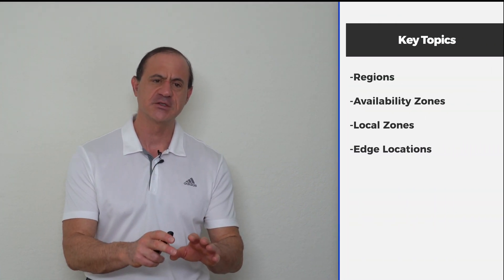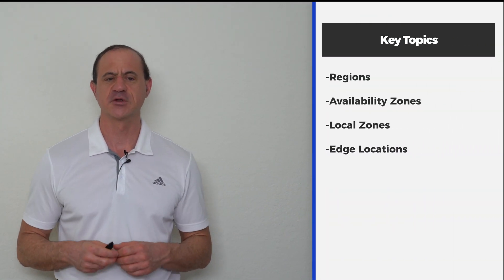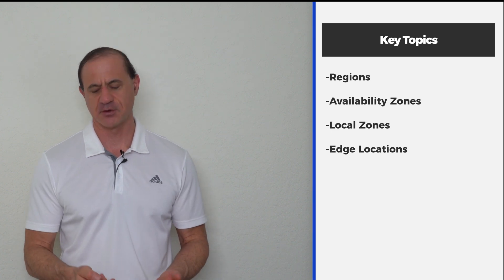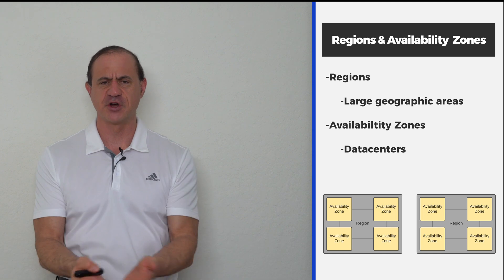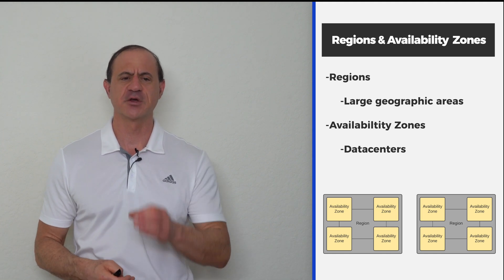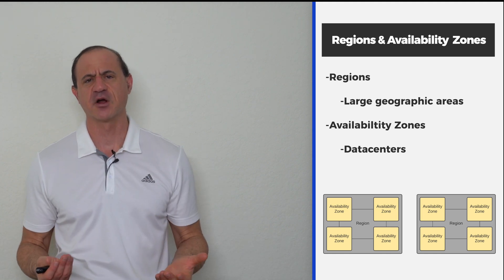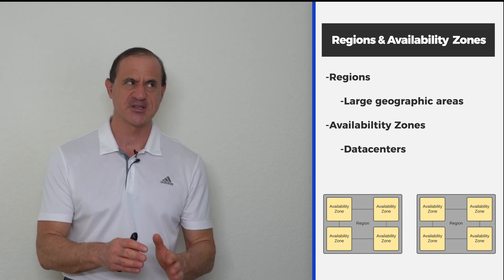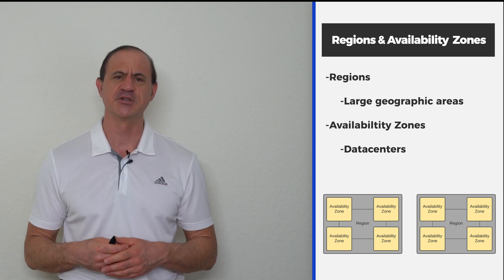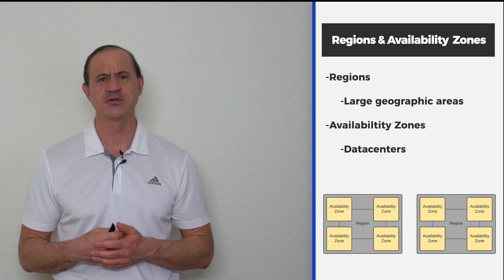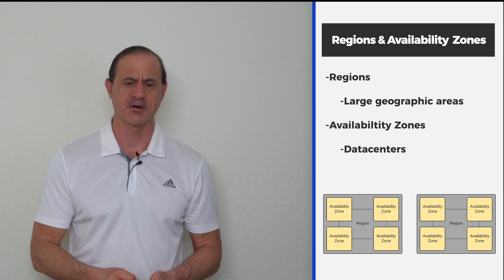What we're going to be discussing today are regions, availability zones, local zones, and edge locations. A region is going to be a large geographic area, and an availability zone is going to be a data center inside of that large geographic area. As you can see in this diagram, the big box represents the region, and inside of that region we've placed several availability zones, which have high speed networking back and forth to each other.